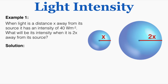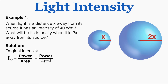Let's do our first problem. When light is a distance x away from its source it has an intensity of 40 watts per meter squared. What will its intensity be when it is 2x away from its source? First, I'll write an equation for the original intensity: I equals power over 4πr², where the radius is the distance x. So the full equation is power over 4πx² equals 40 watts per meter squared.